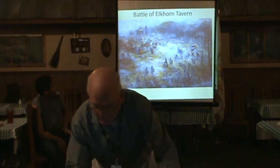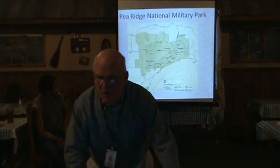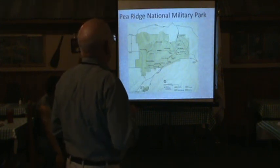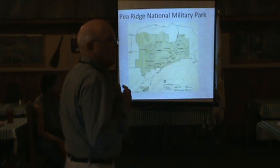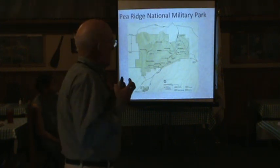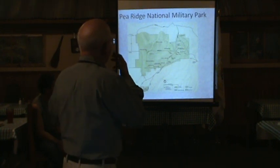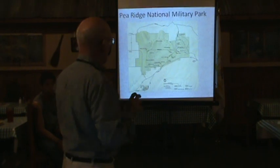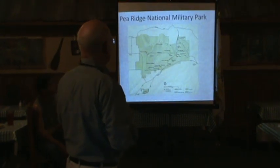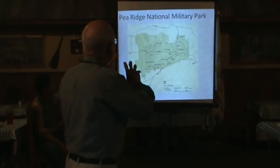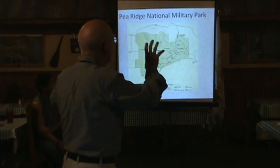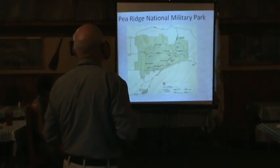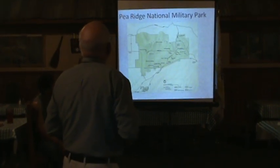Let's move to the battle. This is the military park that's set up there. It's a beautiful park — if you've never been there, it's a striking memorial to this battle. They have cannons all over the place. This represents essentially the entire arena of the Battle of Pea Ridge.